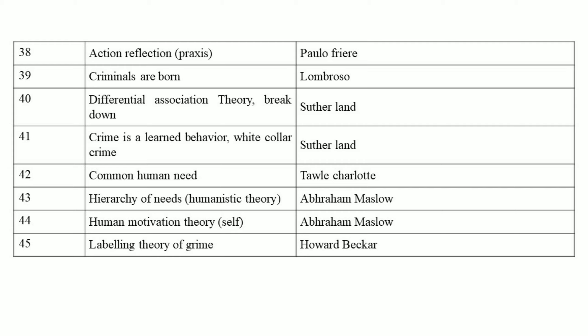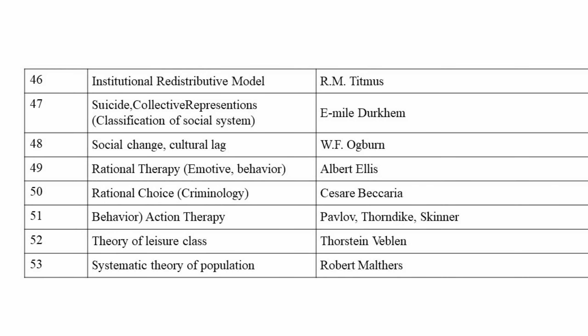Common human needs was developed by Charlotte Towle. Next one: hierarchy of needs, humanistic theory, and human motivation theory — all developed by Abraham Maslow. So Maslow developed mainly three concepts: hierarchy of needs, humanistic theory, and human motivation theory.